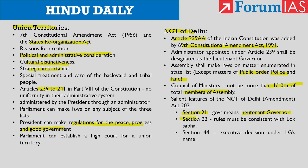Section 33 mentions that the legislative assembly makes rules to regulate the procedure and conduct of business in the assembly. But the 2021 NCT Act states that such rules must be consistent with the rules of procedure and conduct of business in the Lok Sabha. Section 44 deals with the conduct of business — all executive decisions taken by the elected government shall be in the lieutenant governor's name. The 2021 Act empowers the lieutenant governor to give his opinion on certain matters, and his opinion must be taken before any executive action is taken on decisions of the ministers or council of ministers. The issue of control over bureaucracy has now been taken to the judiciary — we have to wait for the judgment.